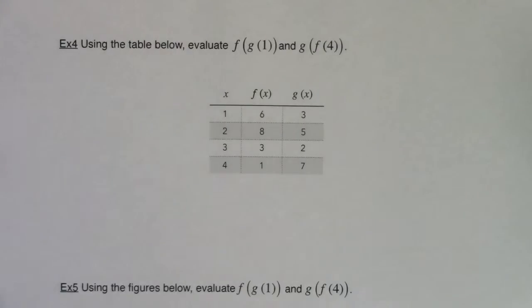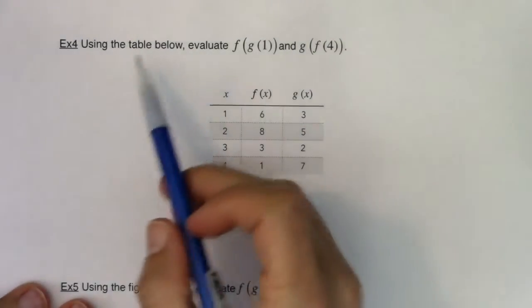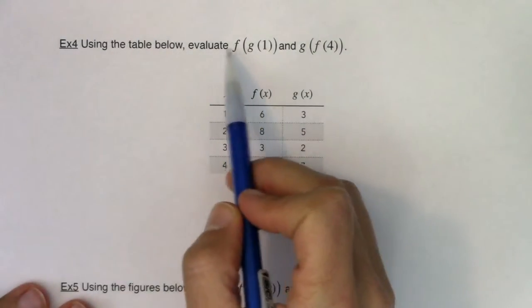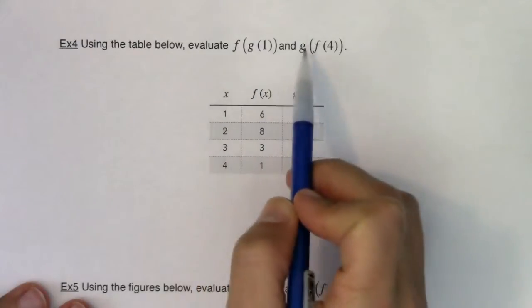Hey Math 31, we're going to continue composing functions. This time I'm going to use the table below and evaluate f of g of 1 and then g of f of 4.